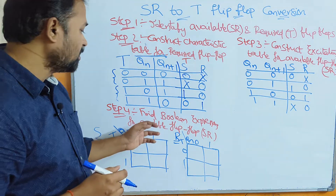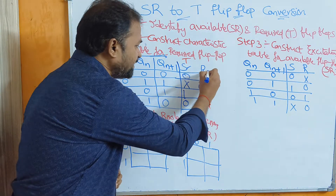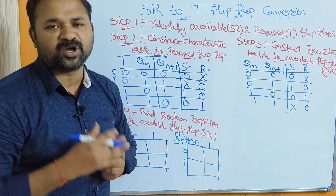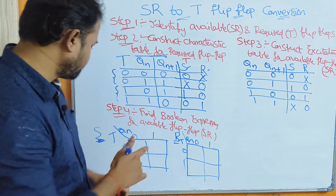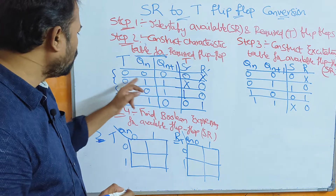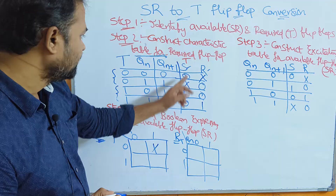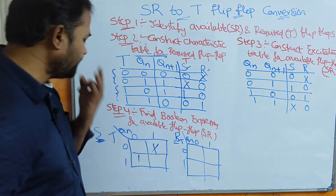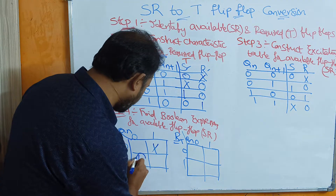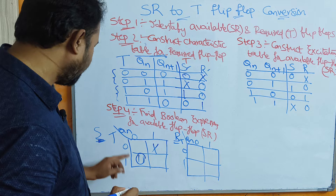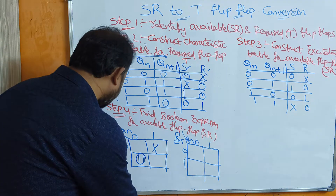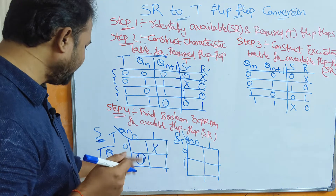Step 4 is: find the Boolean expression for the available flip-flop inputs S and R using a Karnaugh map. Since we have two inputs T and Qn, a two-variable Karnaugh map is sufficient. Observing the S column: the cell at T=1, Qn=0 has value 1; it cannot be grouped with others. So the expression for S is T·Q̄n.